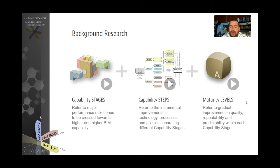Thirdly, the Maturity Levels or Maturity Index concept model refers to the gradual improvement in quality within these Capability Stages. So if Capability Stages refer to the minimum ability to do something — the minimum ability to model or to collaborate — Maturity Levels refer to the increase in quality, repeatability, and predictability within these abilities. Please refer to these models in order to fully understand the Point of Adoption Model.